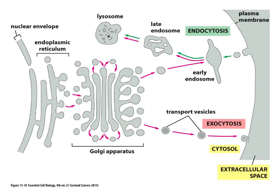There is no way that the endosome will end up fusing with the Golgi, the endoplasmic reticulum, or any other part of the endomembrane system other than the lysosome. This is a protective measure to stop the cell from becoming infected by pathogens via this pathway.